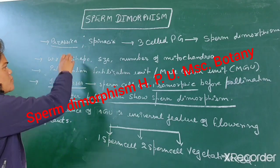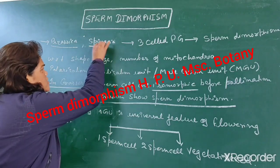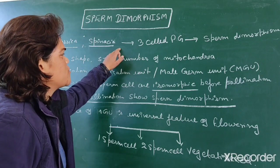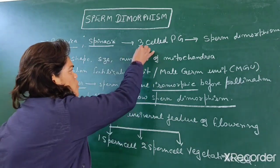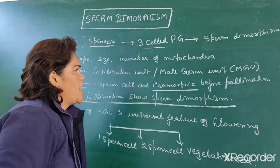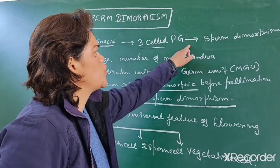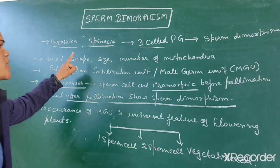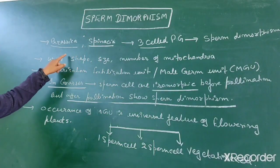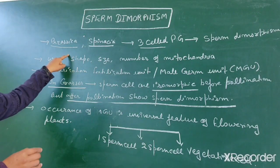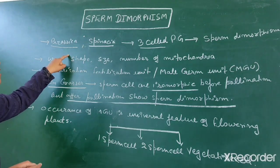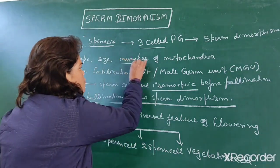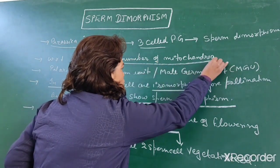Sperm Dimorphism. In Brassica and Spinacea, pollen rate dispersal takes place at the pre-sale stage and two sperms show sperm dimorphism. Sperm dimorphism means both the sperms show differences in shape, size, and number of mitochondria.